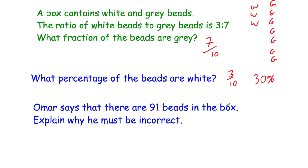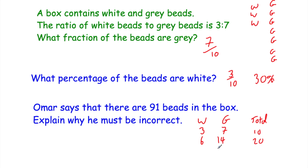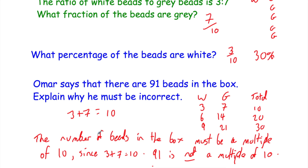Omar says there are 91 beads in the box. Explain why he must be incorrect. With a ratio of white to grey of 3 to 7, the total number of beads must always be a multiple of 10 because 3 plus 7 equals 10 — you could have 10, 20, 30 beads and so on. Since 91 is not a multiple of 10, Omar must be incorrect.